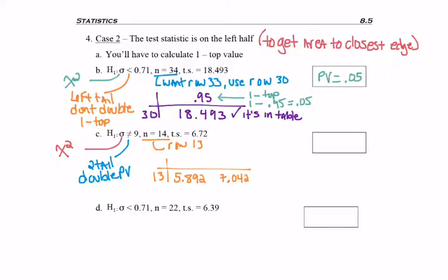I'm going to see 5.892 and 7.042, but the number 6.72 is not in the table. It's in between the two values I just listed. So as I read up, I see larger values, .95 and .90. My p-value is in between those values.